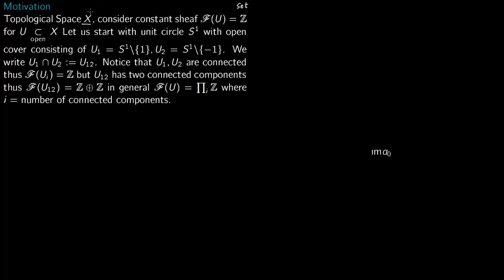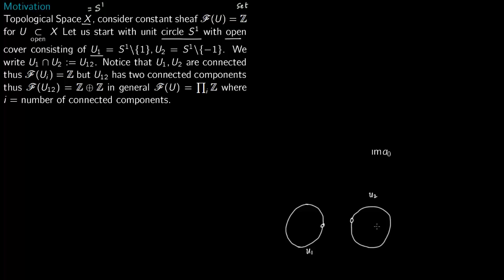Let us fix S to be the unit circle S¹. This S¹ has an open cover consisting of two sets: U1, which is S¹ minus 1, and U2, which is S¹ minus (−1). Let us draw this. So U1 has 1 missing, and U2 has −1 missing. Now both U1 and U2 are connected sets, so F of U1 is integers and F of U2 is also integers.